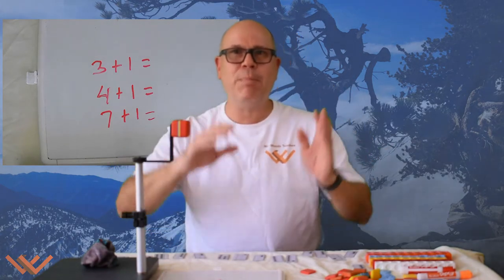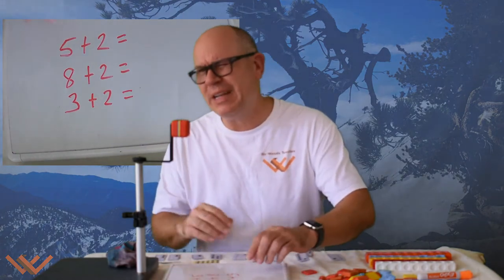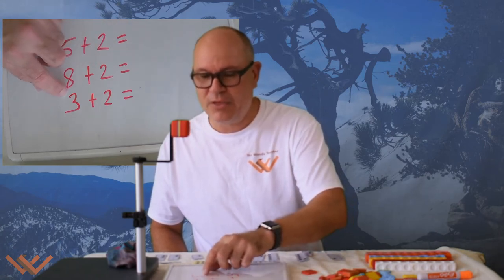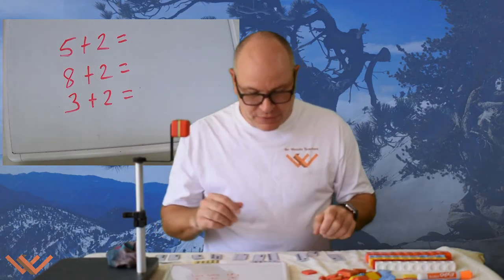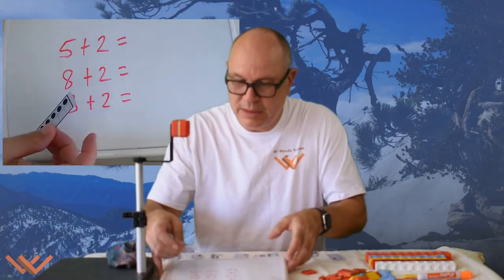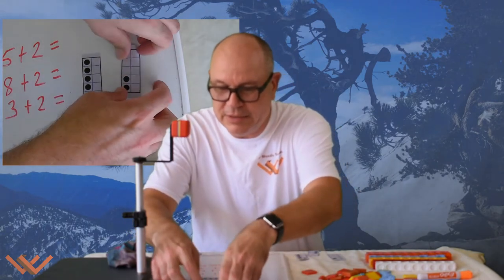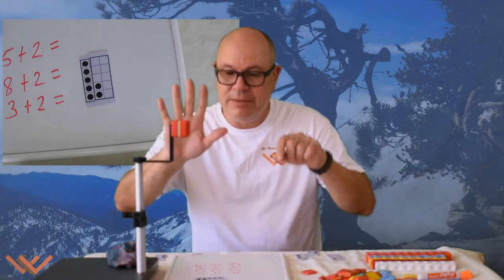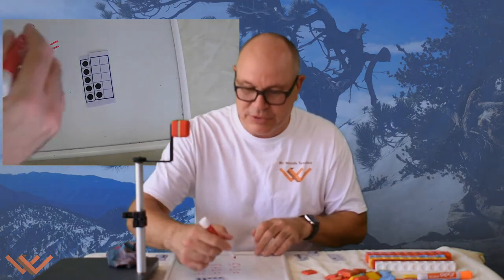Next we're going to do a number plus two. We have more number sentences to complete this time: five plus two is equal to what? Eight plus two is equal to what? And three plus two is equal to what? So five plus two — how would you figure that out? Well, there are different ways. I have five, and I add two more. You can count it up, or you can use your fingers. Five plus two, count on: five... six, seven. So five plus two is equal to seven.